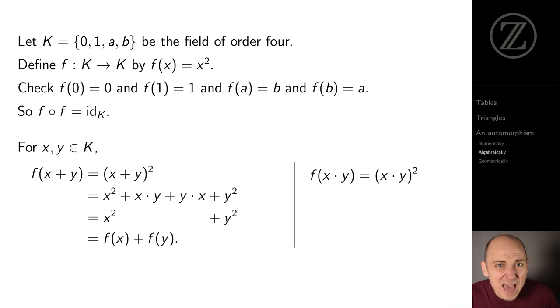Or in other words, if we add first and then apply F, that's the same as applying F first and then adding. And we say that the squaring function, this function F respects addition or preserves addition. It's even easier to compute F of x times y, right? x times y squared is x, y, x, y, which with some commutativity and associativity is x, x times y, y. That is, it's just F of x times F of y.